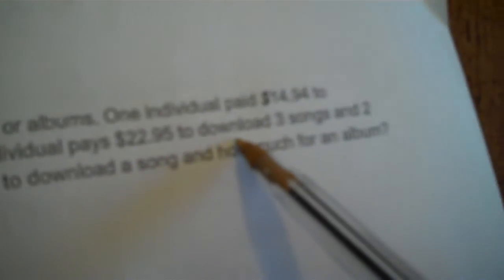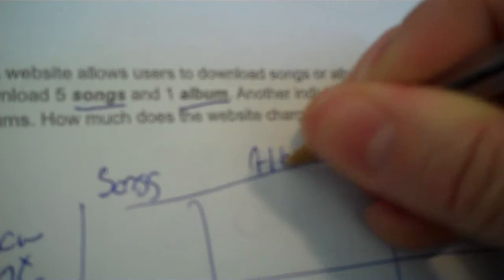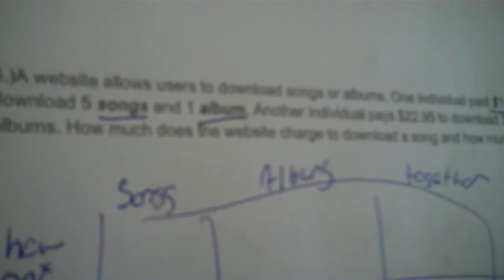Last problem. A website allows users to download songs or albums. One individual paid $14.94 to download 5 songs and one album. Another individual pays $22.95 to download 3 songs and two albums. How much does a website charge to download a song? How much for an album? So, together, how many units, per unit, and total. You've got money, songs, albums. The independent units are the songs and the albums, then money total, money per unit.